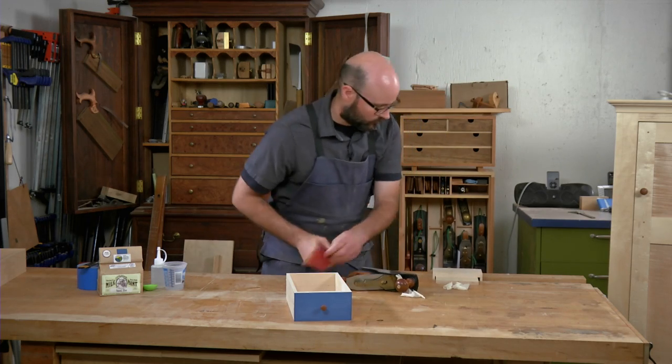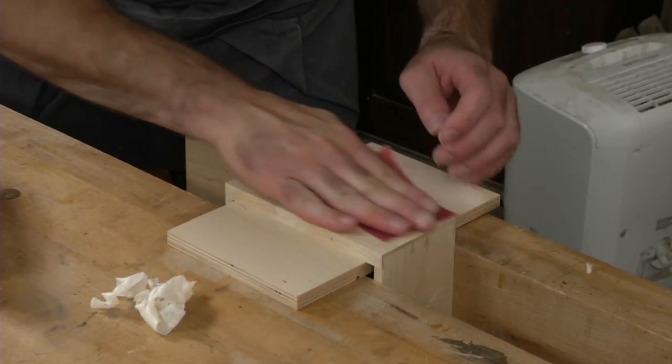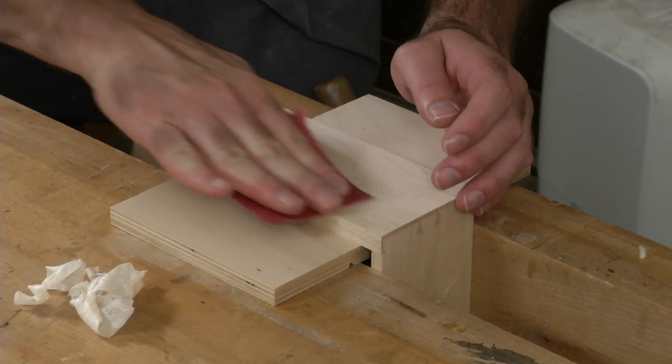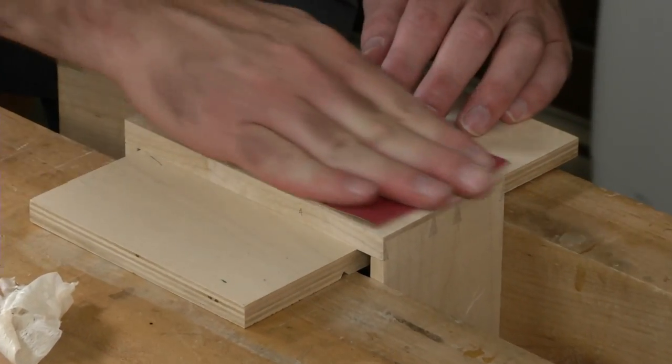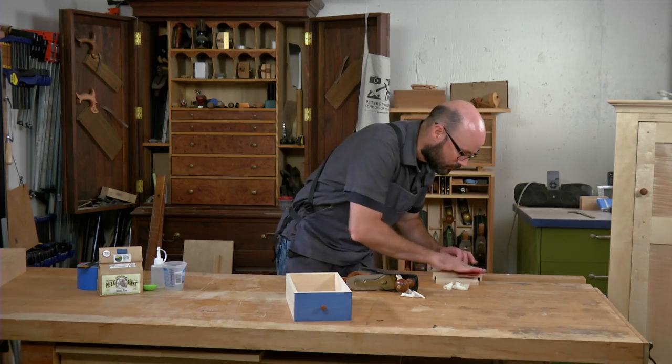Once that's done, a quick sanding with 220 grit paper is all you need. Don't bother sanding any finer. The water-based milk paint will raise the grain, requiring additional sanding after the first coat.